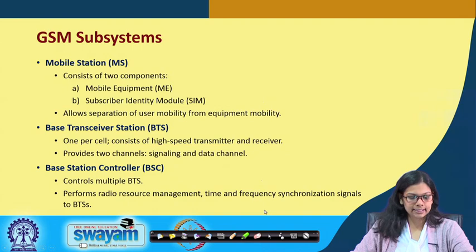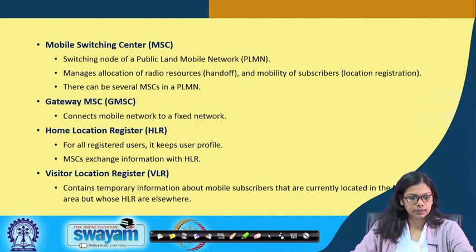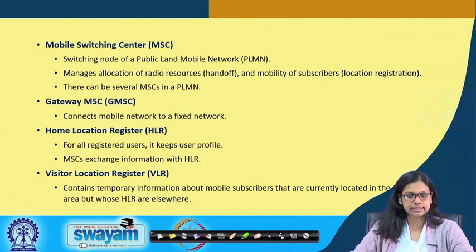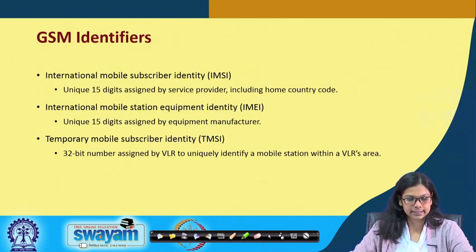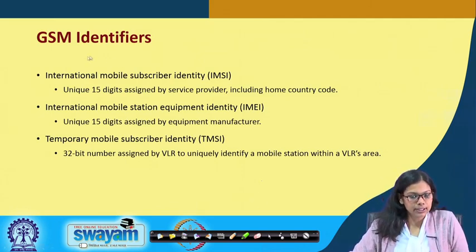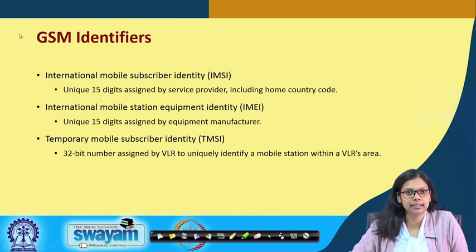So to summarize, the GSM architecture components are: Mobile Station, Base Transceiver Station (BTS), Base Station Controller (BSC), Mobile Switching Center (MSC), Gateway MSC, Home Location Register (HLR), and Visitor Location Register (VLR). Now an important thing — what are the GSM identifiers, and how is a GSM identified?